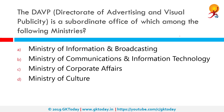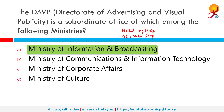DIPP's main responsibility includes formulation of promotional and developmental measures to boost the industrial sector. The DAVP, or Directorate of Advertising and Visual Publicity, is a subordinate office of which of the following? DAVP is a nodal agency to undertake multimedia advertising and publicity for various ministries — it makes ads and designs publicity campaigns for government bodies, and many autonomous bodies also use DAVP as a service agency.